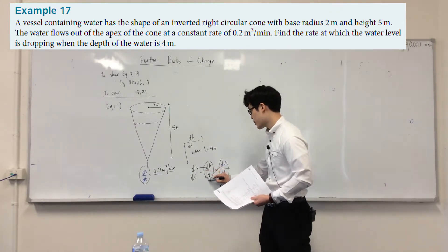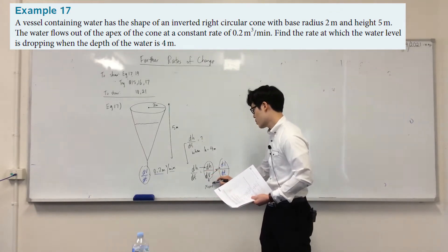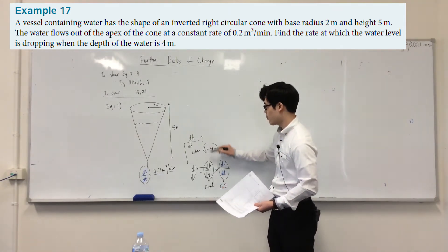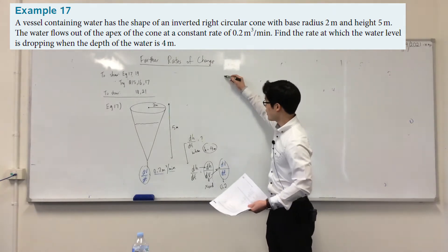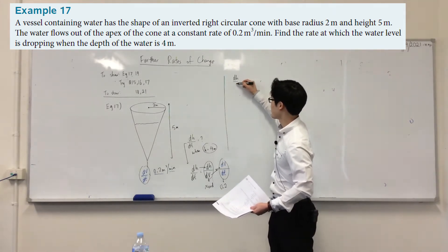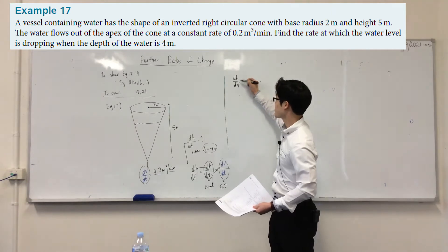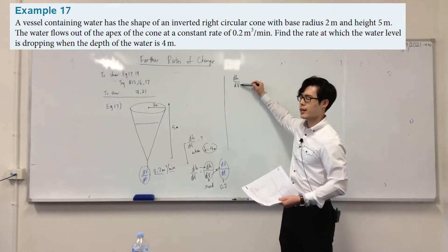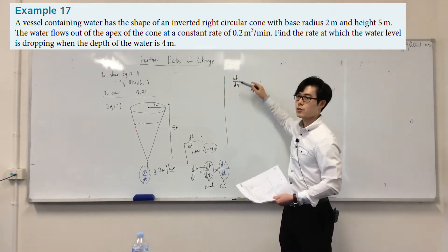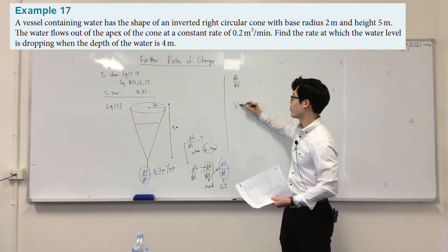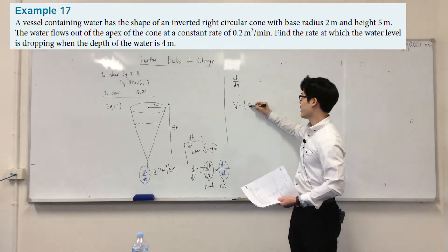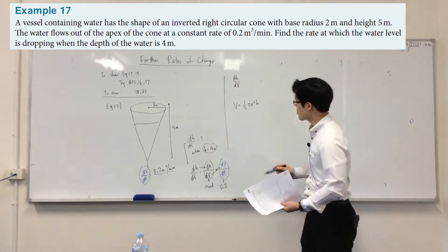We know dV/dt is 0.2 — that's given. We need to find dV/dh, and once we have that expression we'll substitute h = 4. Since the question involves volume and height, the first thing to think about is the volume formula of a cone: V = (1/3)πr²h. That's on your formula sheet.